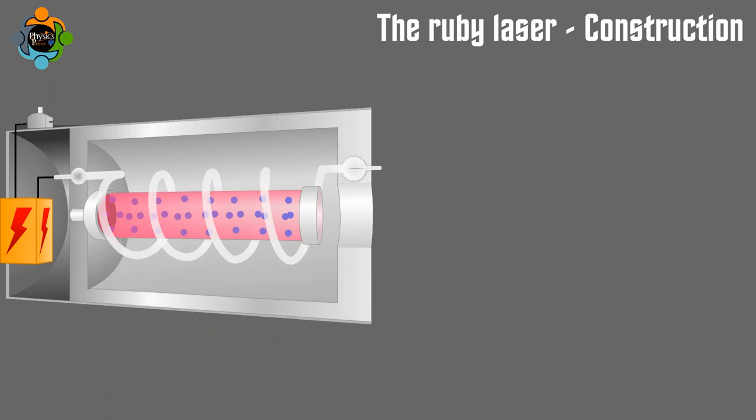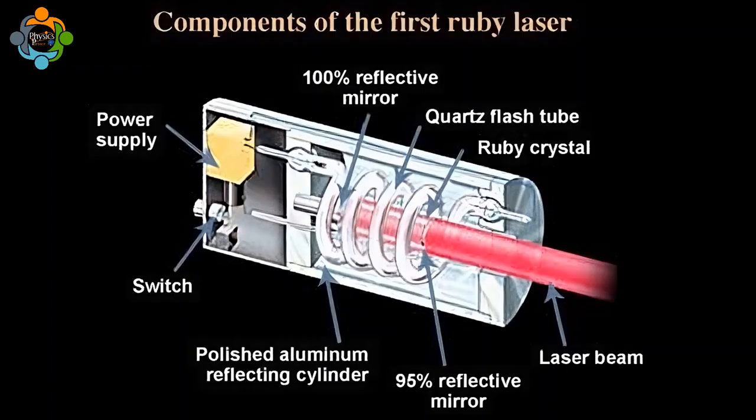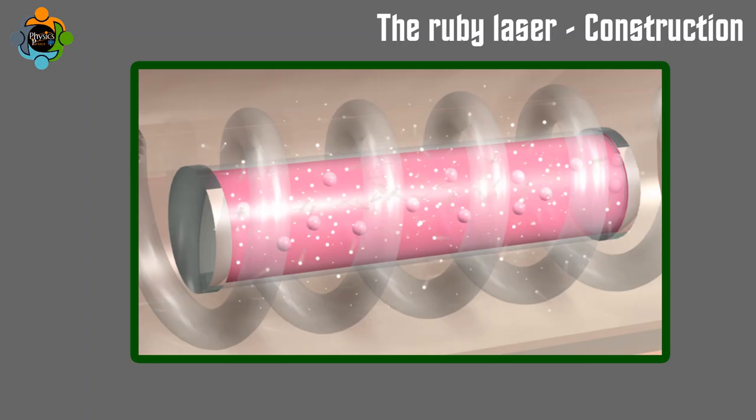It consists of a ruby rod as the gain medium, a high-intensity flash lamp to excite the atoms in the rod, and mirrors at each end of the rod to create a resonant cavity. The ruby rod is typically surrounded by a cooling system to prevent overheating during operation.